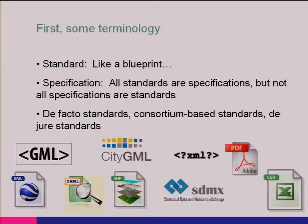By abuse of language, we sometimes confuse standard and specification. In actuality, a standard is a specification, but not all specifications are standards. Then we have de facto standards. A de facto standard is a specification that has become so popular because people just decided to use it, mainly because it was implemented in some software that got considerable market acceptance. But these specifications may or may not be open — they may not be publicly available without some sort of licensing agreement. The main problem with de facto standards is that they're owned by a single vendor who can, and often does, change them when they want to.